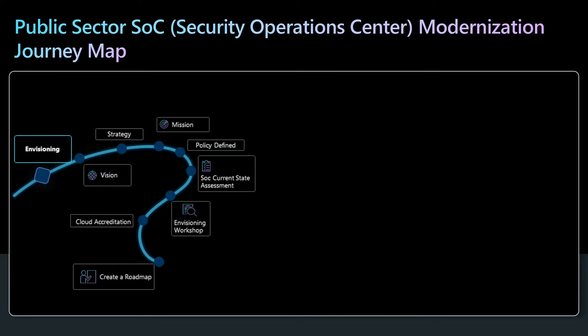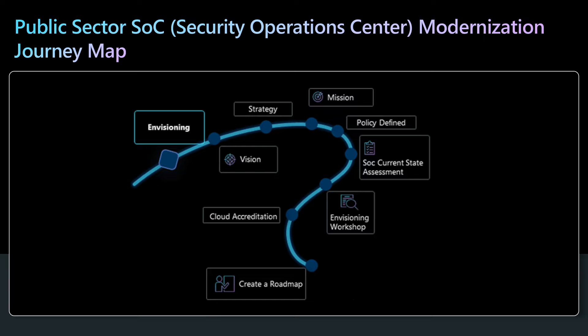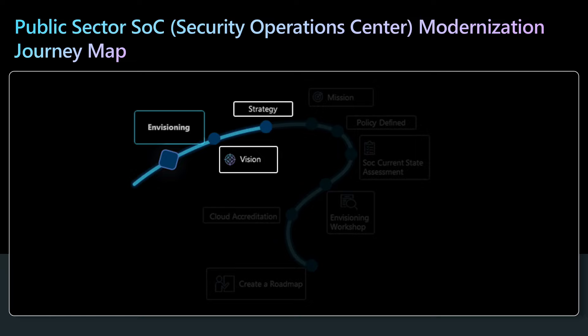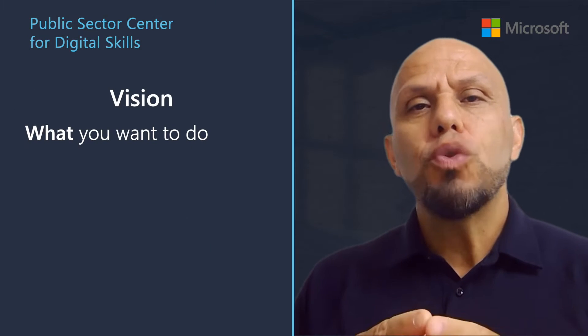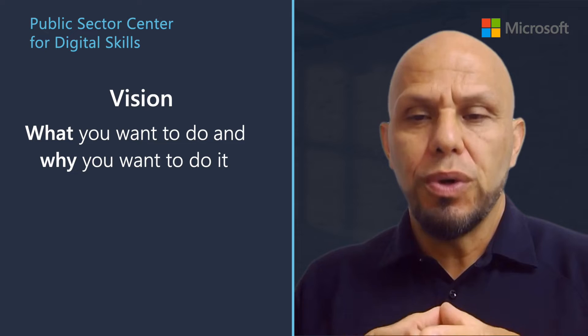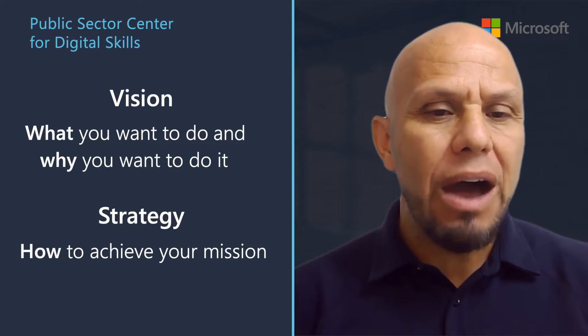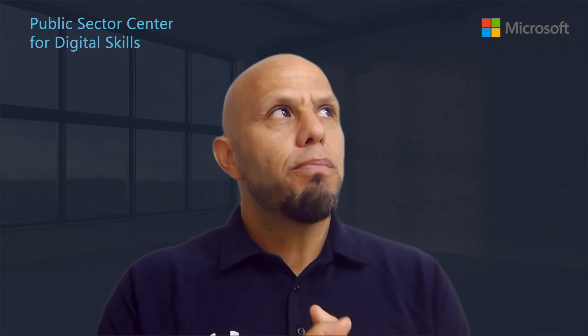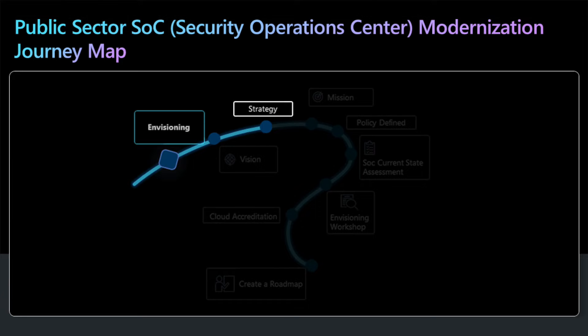Let's start with the first phase: envisioning. This phase is all about preparing for your modernization journey. First, we need to define the vision and strategy. The vision outlines what you want to do and why you want to do it, and the strategy is how to go about achieving your vision. An example of a vision would be: we need to modernize our government security operations center to improve our cyber resilience against advanced threats from nation states and cyber criminals.